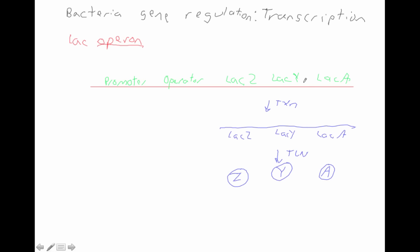Every gene in a single operon has a function in a similar pathway. For instance, these are the only three genes necessary to metabolize lactose. We turn this promoter on and make a single transcript, which makes these three proteins — all the bacteria needs to metabolize lactose. Bacteria are under constant environmental pressure, and they can respond really quickly by having a single promoter turning these three genes on at the exact same time.